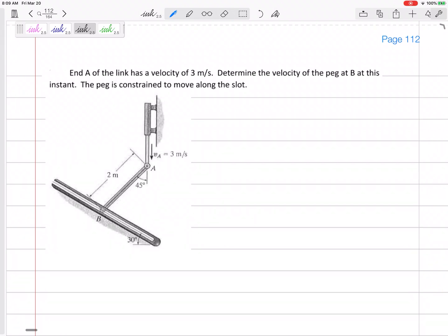Alright, let's look at this one. End A is going down at three meters per second. Determine the velocity of B at this instance. It's constrained along both of these, and this bar right here, bar AB, is not a pure rotation. Let's use the relative velocity method.